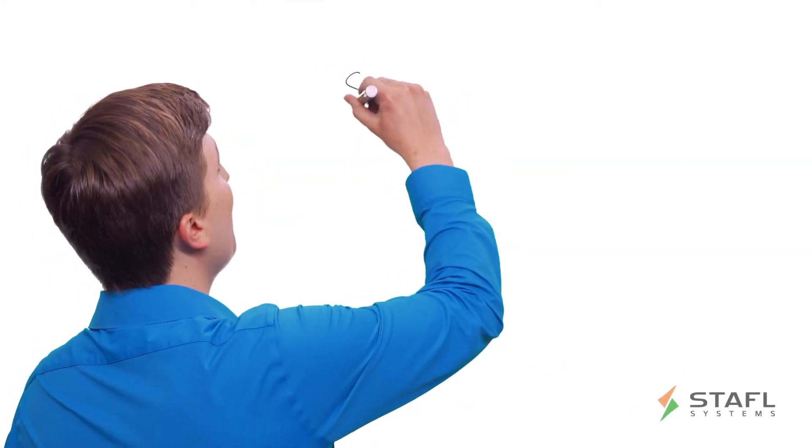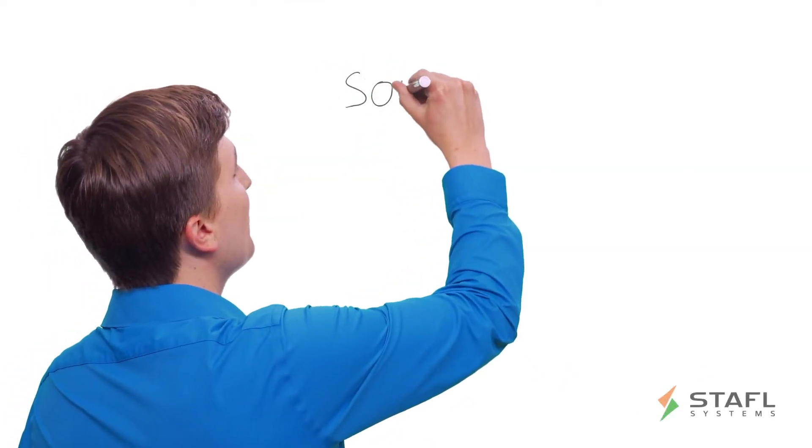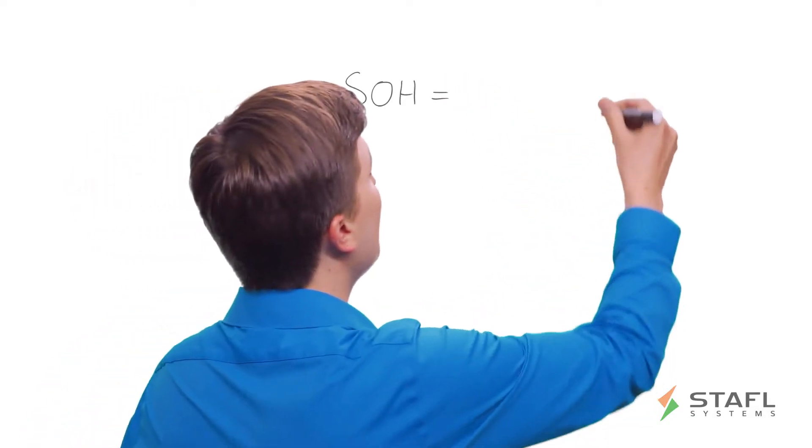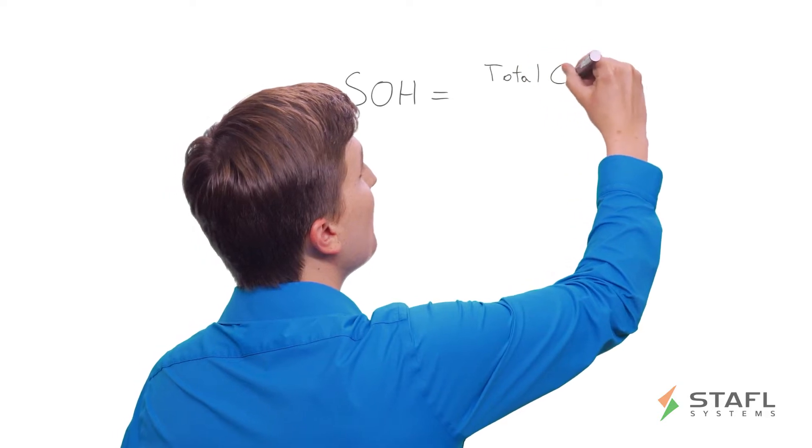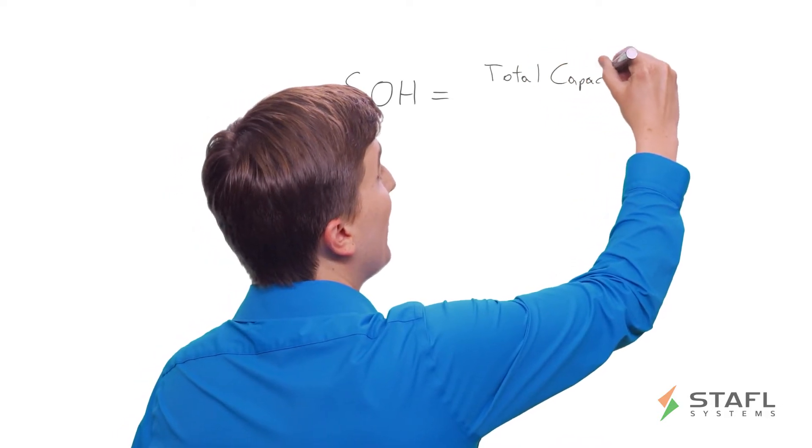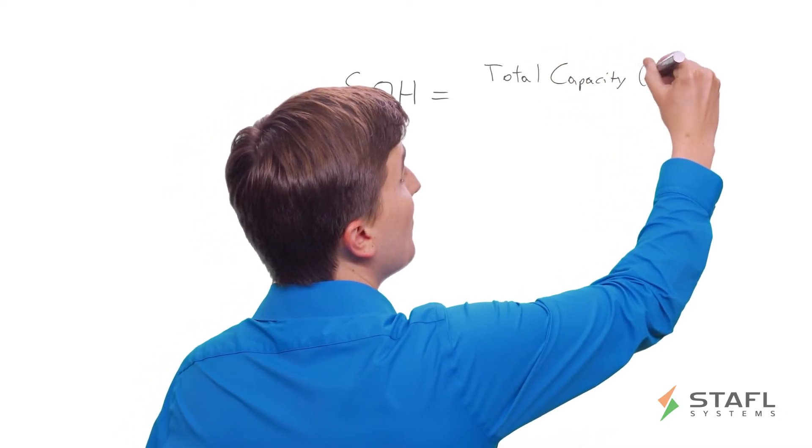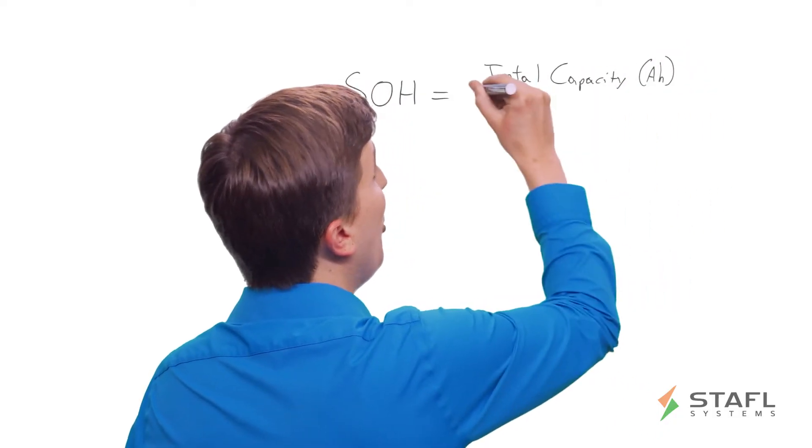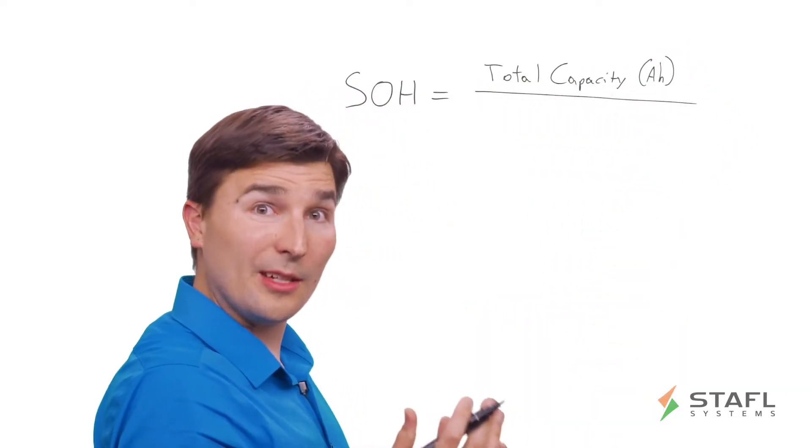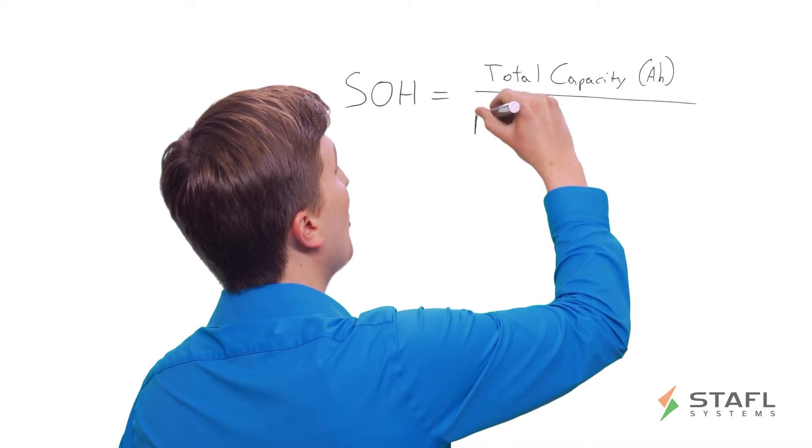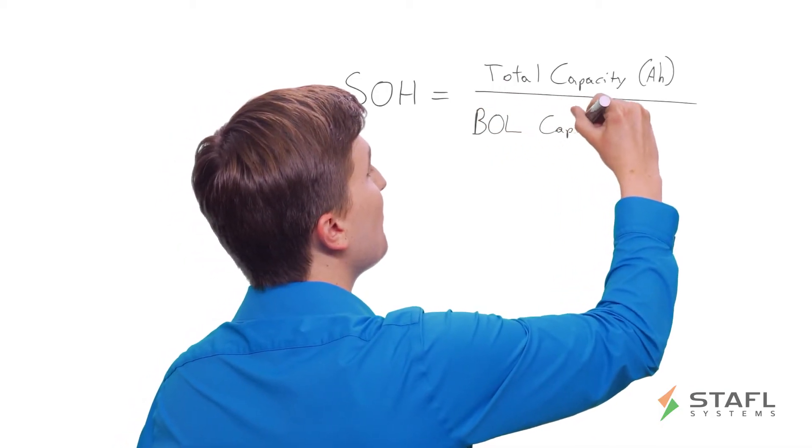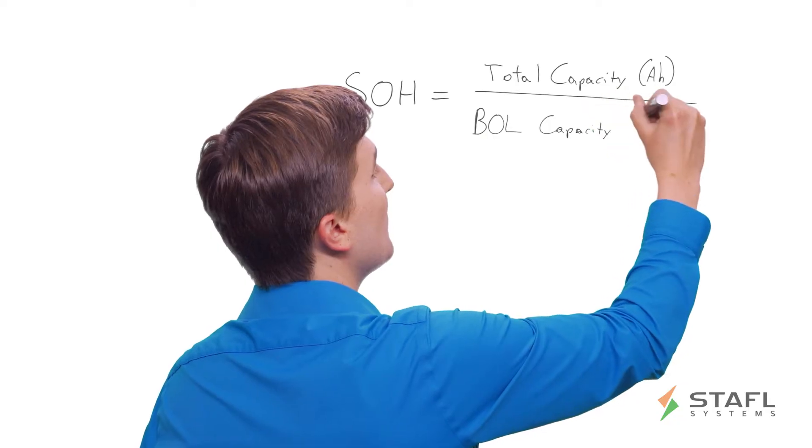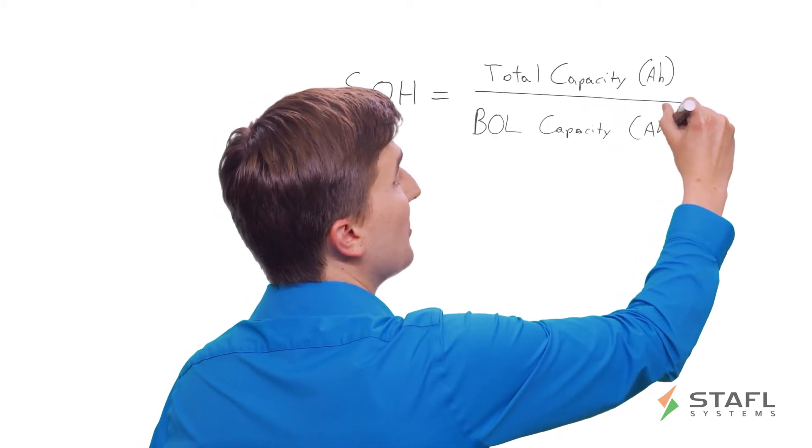State of health, or SOH, is most commonly defined as the total capacity of the battery pack today over the total beginning of life capacity, or what's called BOL capacity. These are given in units of amp hours, or units of charge.